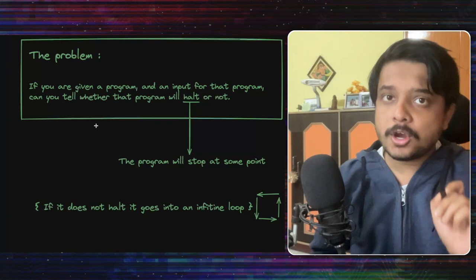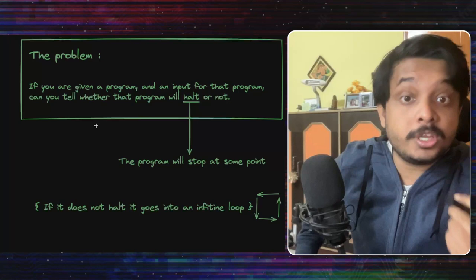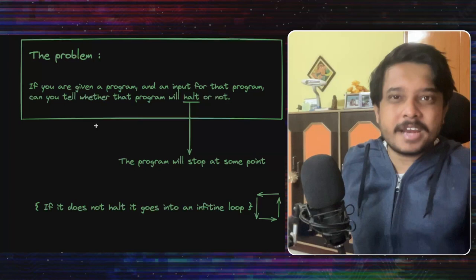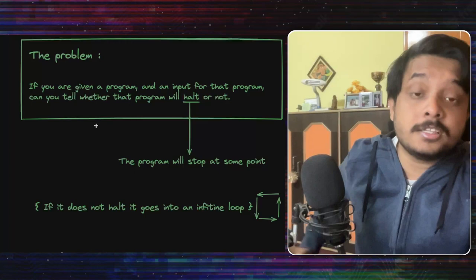What do we mean by halting? It simply means that the program will stop executing at some point. It does not matter if it gives the right output or the wrong output or it simply crashed. It means that it has come to an end at some point one way or the other. When a program does not halt, it goes into an infinite loop, which means we simply do not know when the program will end or will it ever end for that matter.